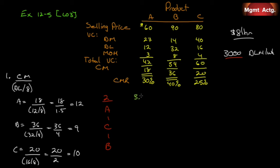Number three: by paying overtime wages, more than three thousand hours of direct labor can be made available next week. Up to how much should the company be willing to pay per hour in overtime wages, as long as there is unfilled demand? If we focus on product A, we're already paying eight dollars and can generate another twelve dollars per hour in contribution margin.